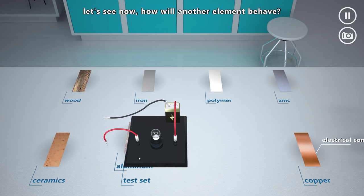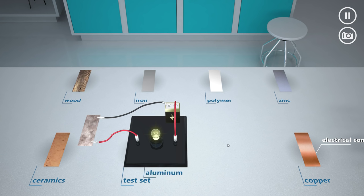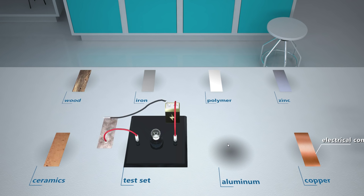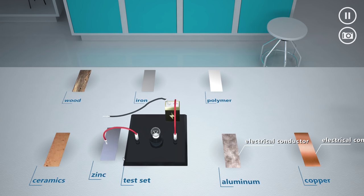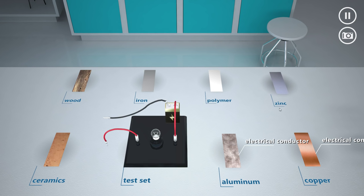Let's see now. How will another element behave? Aluminium is also electrically conductive. Its symbol is AL. Aluminium foil, used in the kitchen, is produced from it. Aluminium alloys, because of their light weight, have been widely used. They are found in body parts, vehicle motors and even in parts of aircraft or spacecraft.